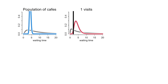The visit to any one cafe has given the golem information about the population of cafes, so it has changed two things: its expectations about a particular cafe, and it has created a memory about all cafes and what their distribution looks like.